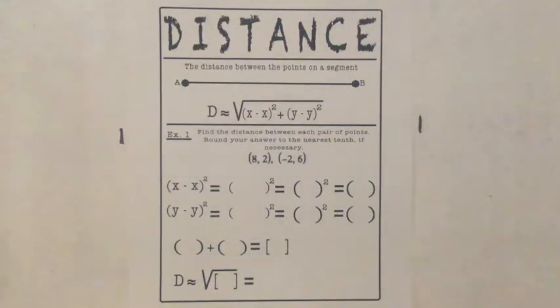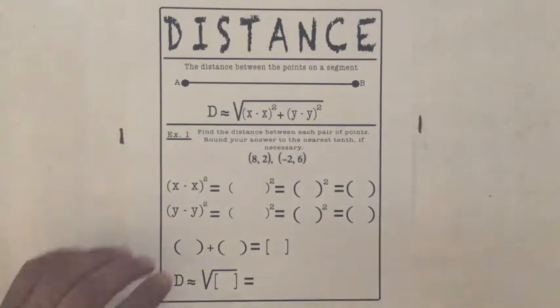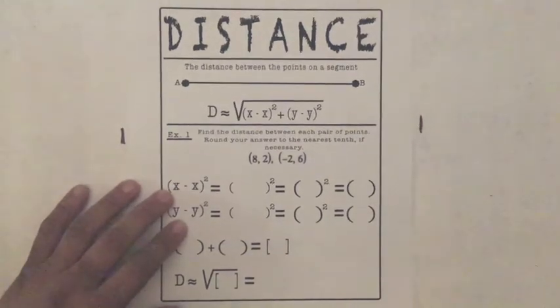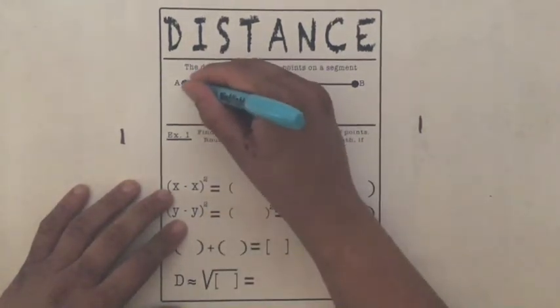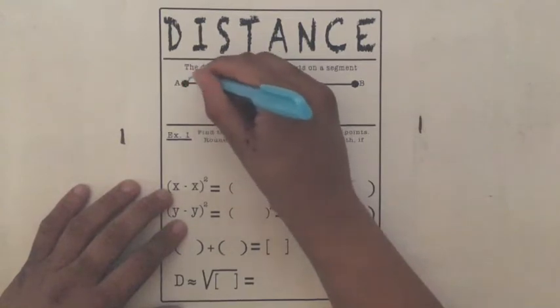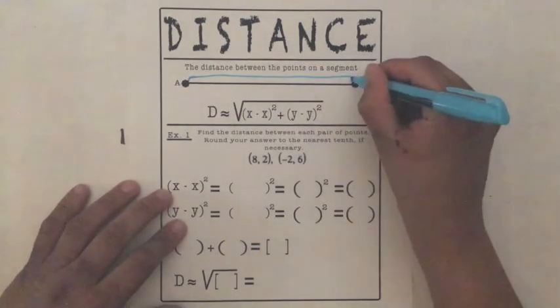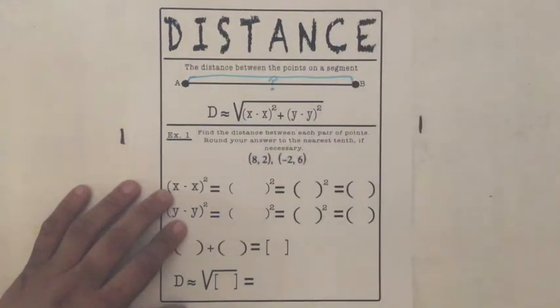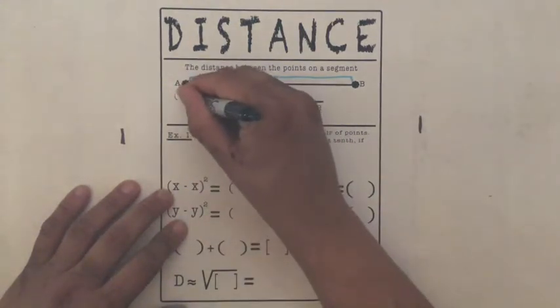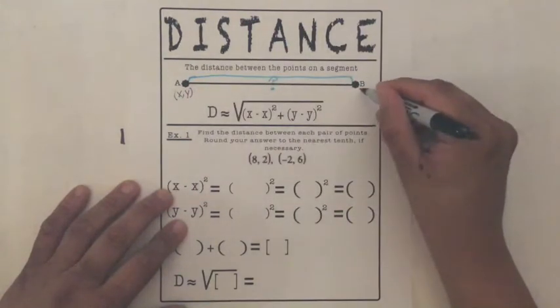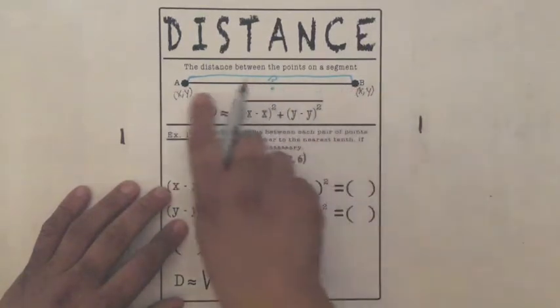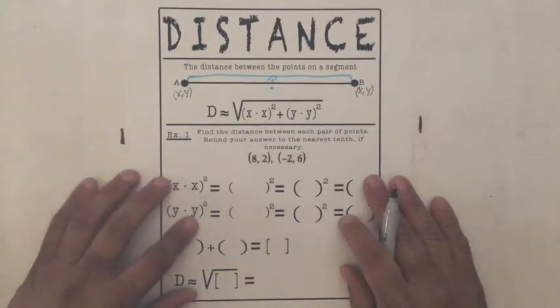So today we do the distance formula. The distance formula is finding the distance between two points. We want to know on a segment, how far A is all the way over to B. How much is that? We don't know. So we have two points here. We have an X and a Y, and here we have another X and a Y, and we need to know how far apart these two are from each other.